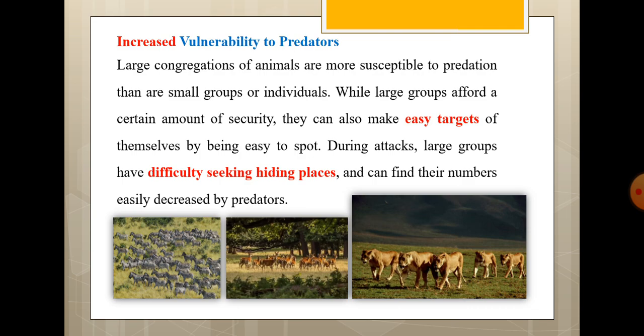Increased vulnerability to predators is another disadvantage. Large congregations of animals are more susceptible to predation than smaller groups or individuals. Large groups can also make easy targets of themselves by being easy to spot.